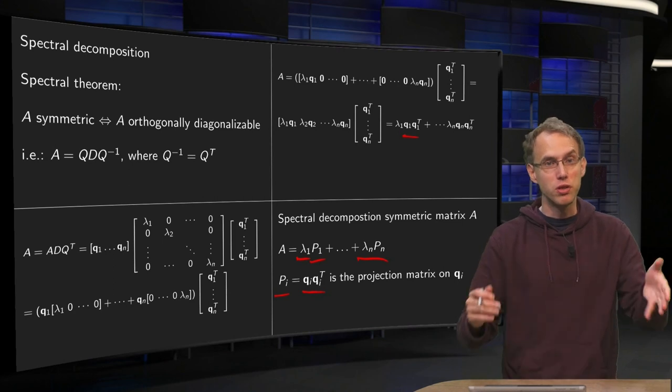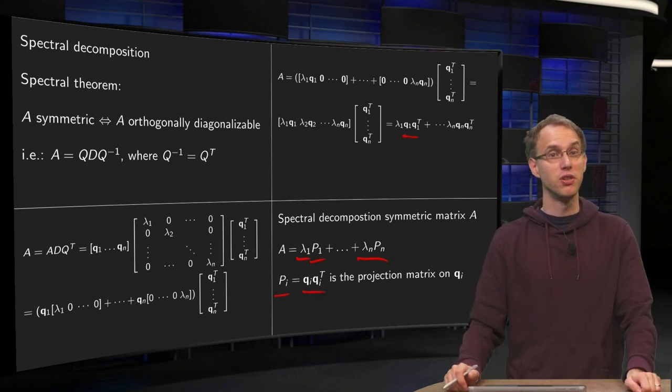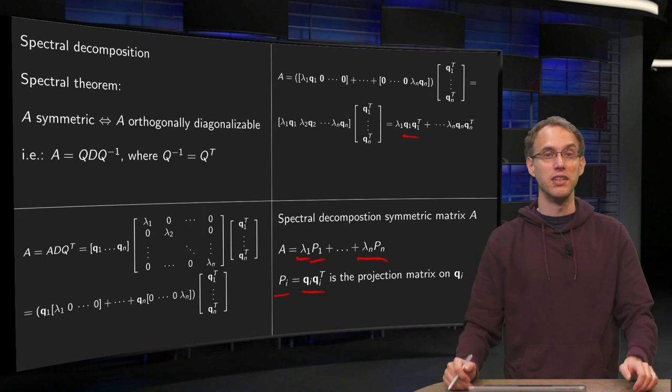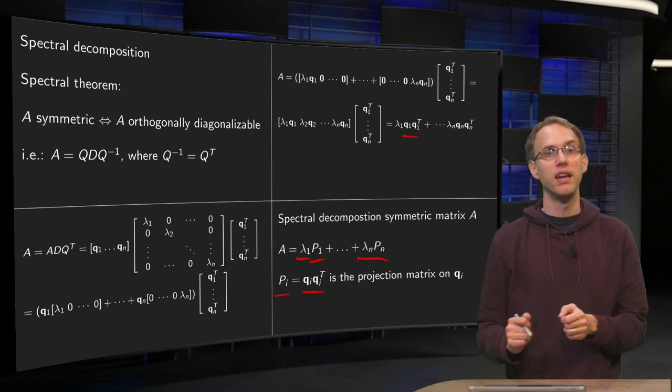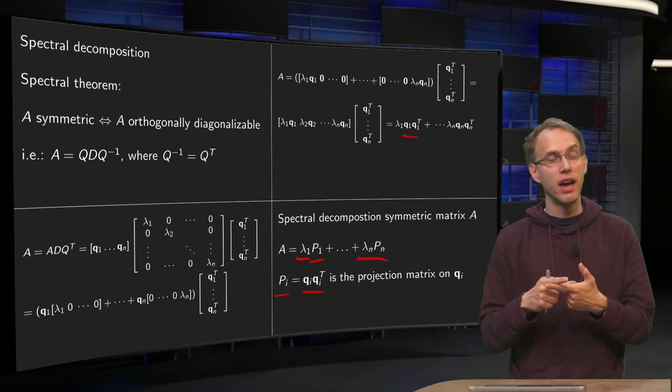So now that's what's called the spectral decomposition of A. Write A as a sum of matrices lambda 1 P1 until lambda n Pn, where lambda i is the eigenvalue and the Pi is projecting a vector on the corresponding eigenvector.